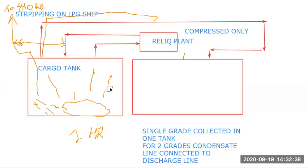For single grade we are using this system where we collect all the cargo in one tank and then it is discharged to the shore. If you have two grades then we connect the condensate line to the discharge line for each time.